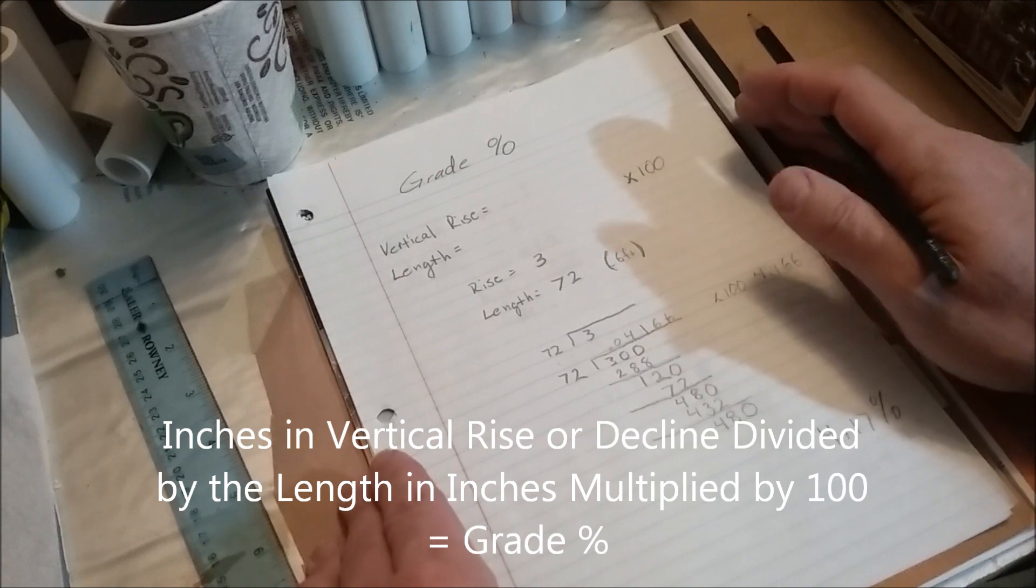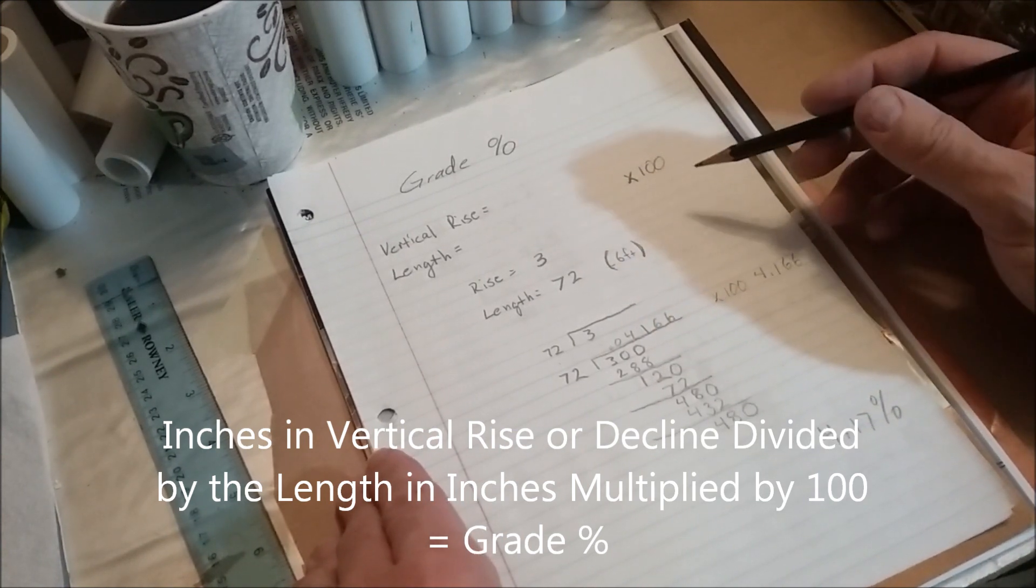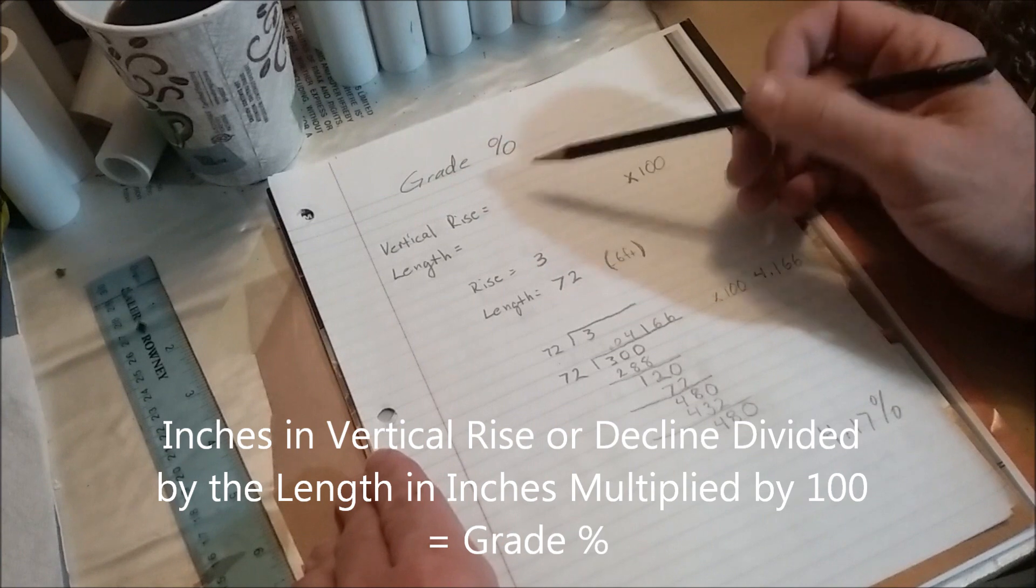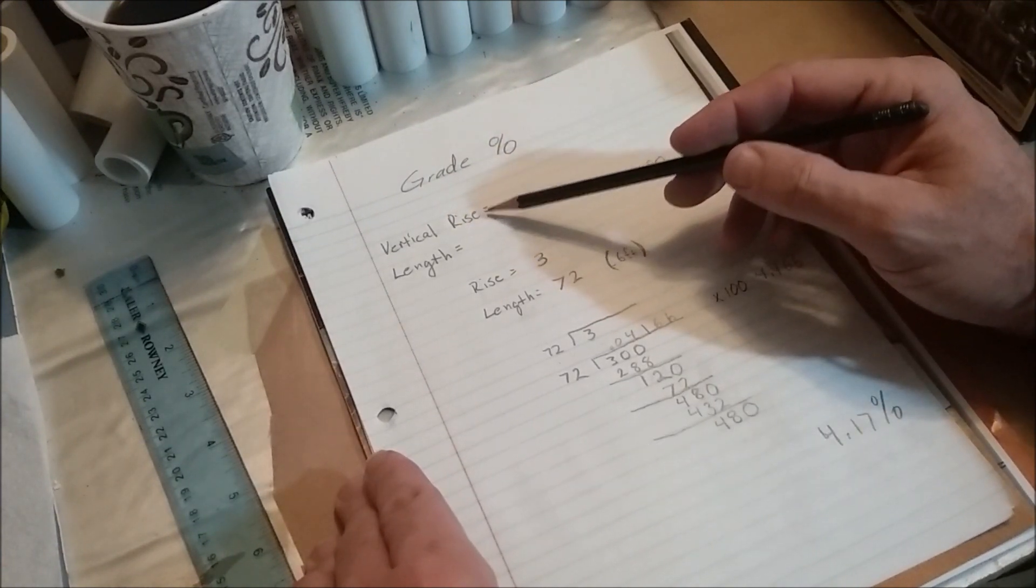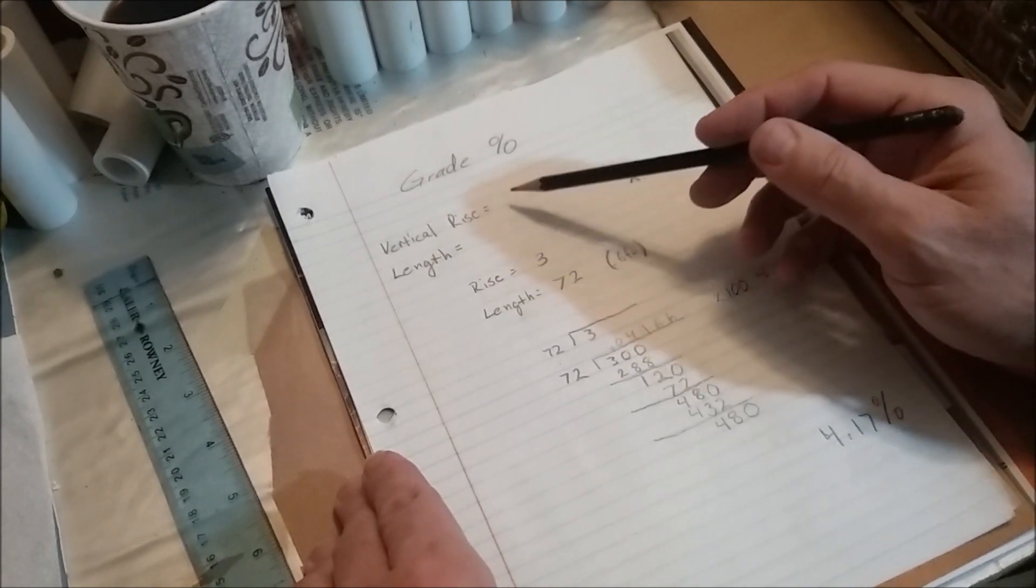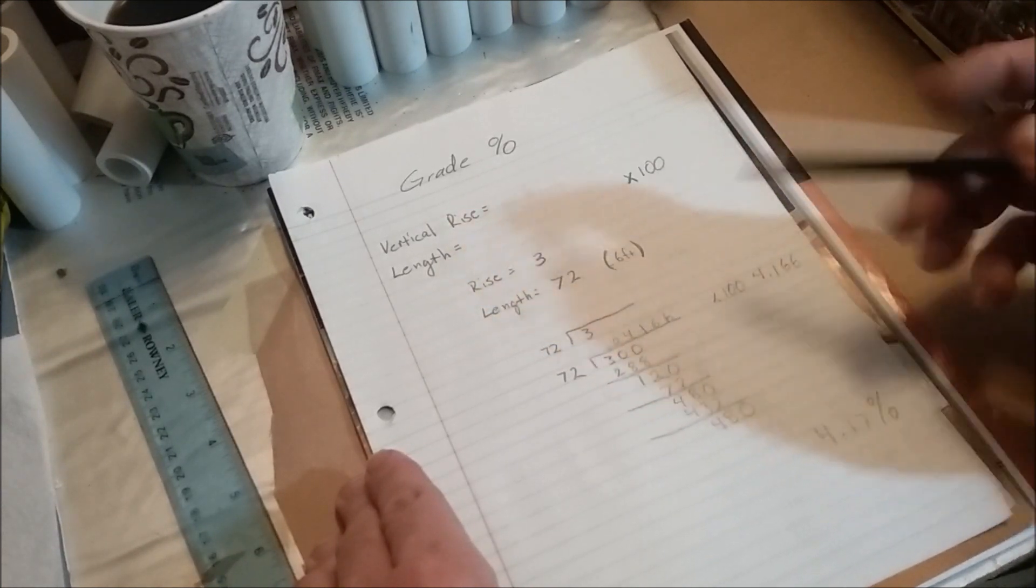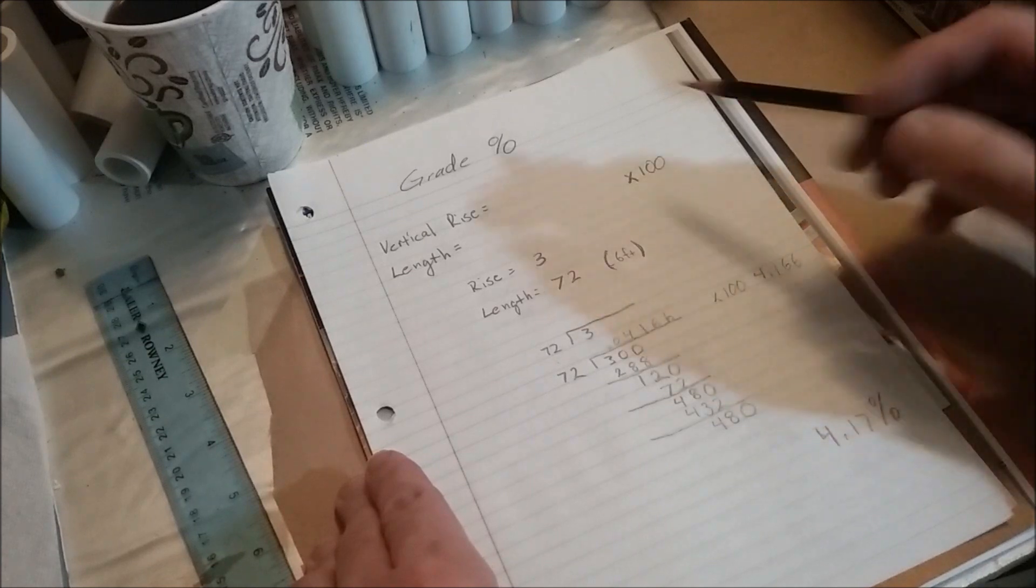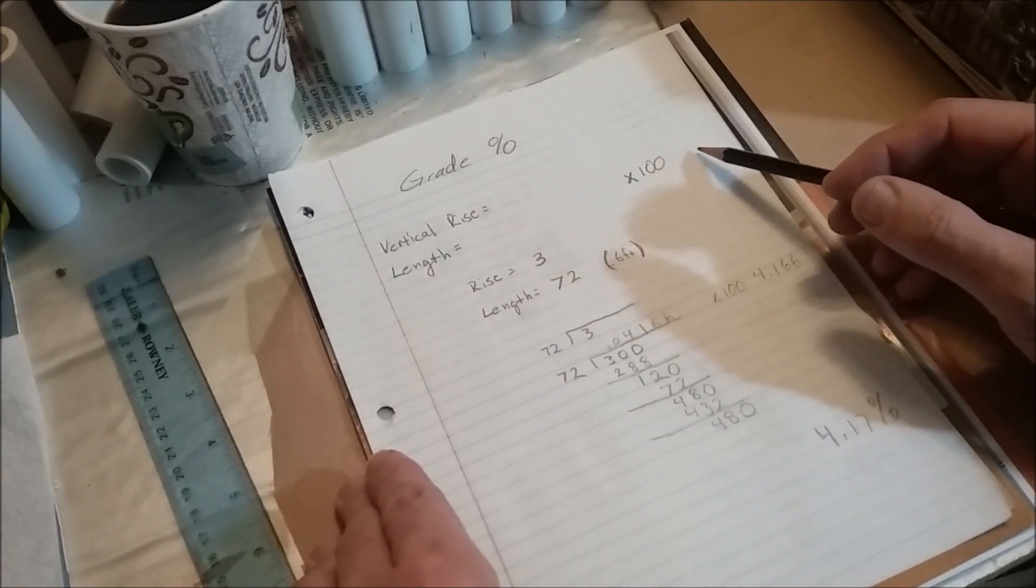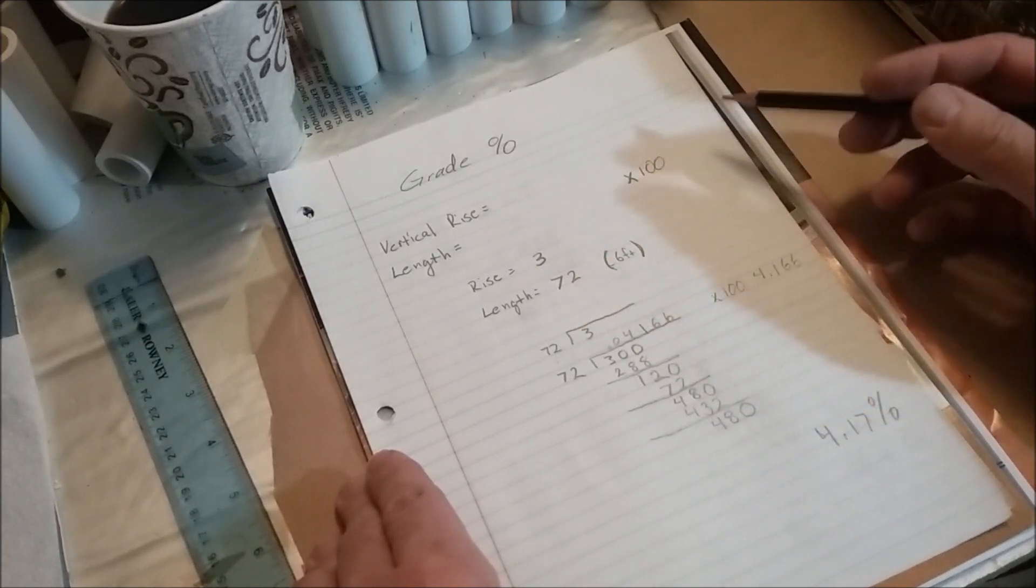It's pretty simple math, but if you don't know how to do it, then it's kind of intimidating. All you have to do is take your vertical rise or decline in inches, divide it by the length in inches that you have space to raise or lower it in, and then multiply that by 100 to eliminate the decimal points, and you have your grade percentage.